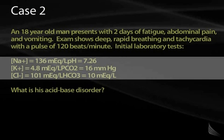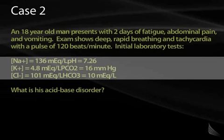Next, we look at respiratory compensation. If the bicarb has dropped by 15, the pCO2 should have dropped by about 20. The pCO2 is slightly lower than expected, so a mild respiratory alkalosis must also be present. Lastly, we calculate the delta gap: the change in bicarbonate concentration should equal the change in anion gap. The anion gap is 25 — approximately 13 above normal. The bicarbonate has fallen by approximately 14. These are essentially equal, so there is only an anion gap acidosis present.